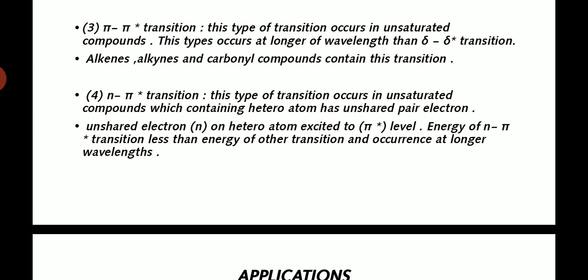Fourth is n-pi transition. This type of transition occurs in unsaturated compounds which contain heteroatoms with unshared pairs of electrons. Unshared electrons on heteroatom are excited to higher levels. Energy of n-pi transition is less than energy of other transitions and occurs at longer wavelengths.